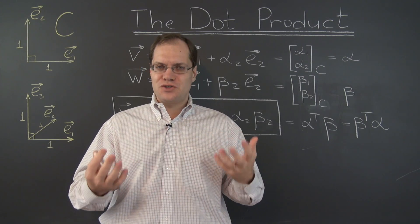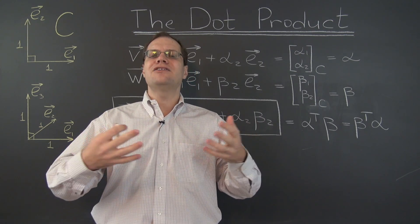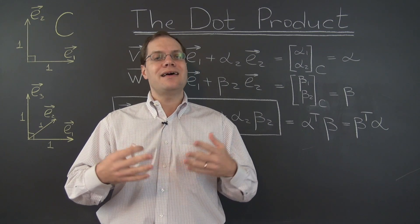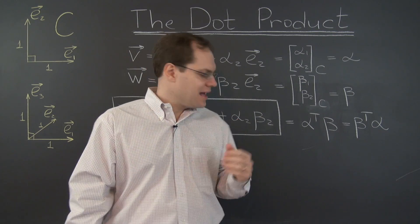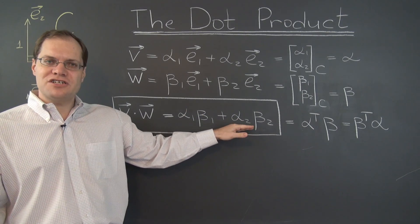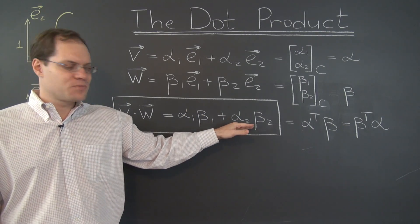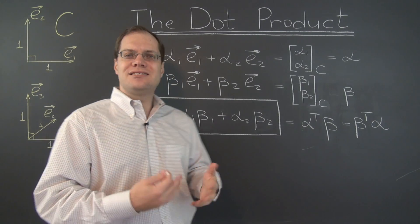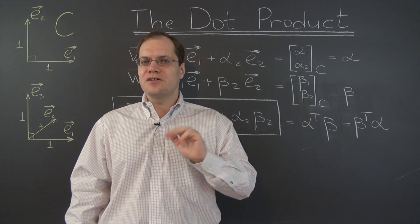And of course it works both ways. If you have two non-zero vectors and their dot product is zero, then they are orthogonal. And now that we have this very nice algebraic expression for the dot product, we can really use it for tests of orthogonality. Here's one example.